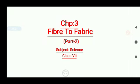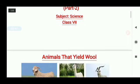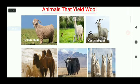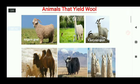Hello students, today we are starting with the second part of Chapter 3, Fiber to Fabric. In this part, first we will discuss the animals that yield wool. The first figure shows an Angora goat, which are generally found in hilly regions such as Jammu and Kashmir. The second figure shows an Alpaca, which are found in South America.